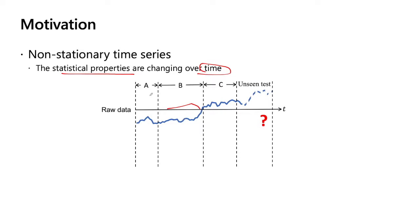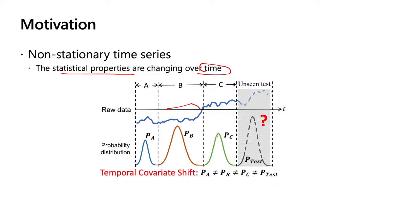Maybe we can dig deeper into this property and try to analyze the properties behind the time series in this way. For example, if you can see that A, B, C are with different distributions, and of course, the unseen test data also has a different distribution. We can see P_A, P_B, and P_C are not the same, and also P_test are not the same too. We call this temporal covariate shift. It means that the statistical properties of the time series are changing over time, resulting in their probability distribution not being the same.